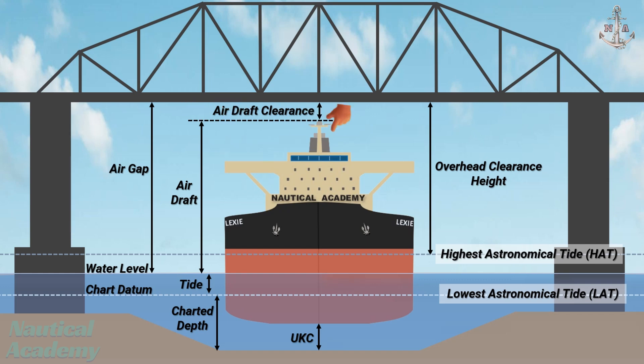Navigating under a bridge or overhead obstruction requires careful planning and precision. Mariners must calculate the ship's air draft and under keel clearance, while also taking into account the bridge's fixed height and the constantly changing water level due to the tide. It is precise coordination of multiple factors to ensure a safe and successful passage. An example of this calculation will be covered in part two of this video series.